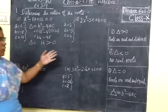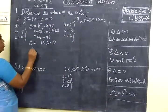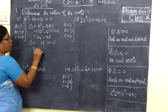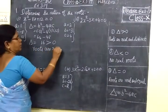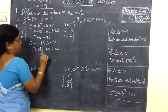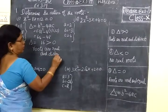Delta greater than 0. In general, roots are real and distinct. So here we are writing: the quadratic equation has real and distinct roots. So the first question is over.